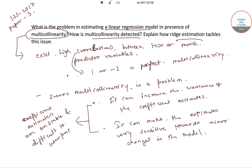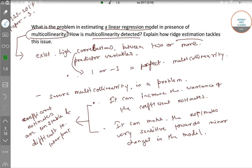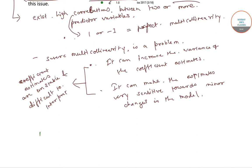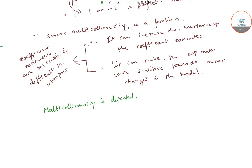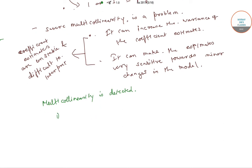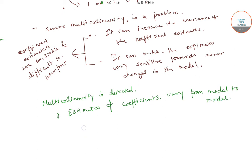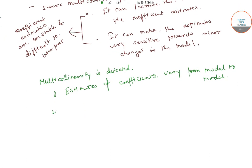Those are the problems in estimating the linear regression model in the presence of multicollinearity. Next is how multicollinearity is detected. There are many methods used for detection. The first one is that if the estimates of coefficients vary from model to model.